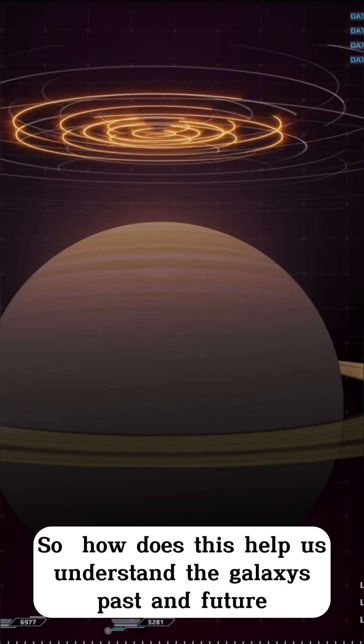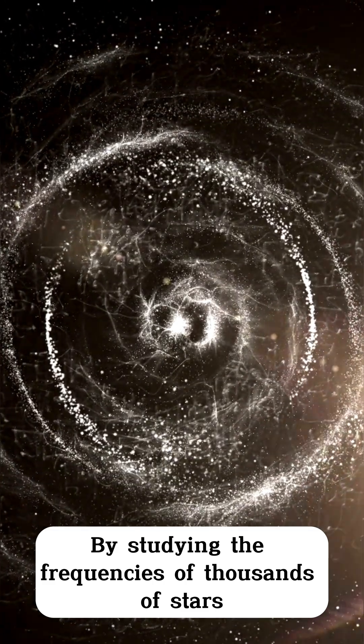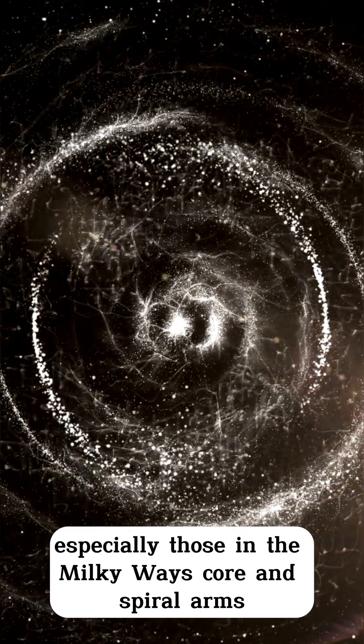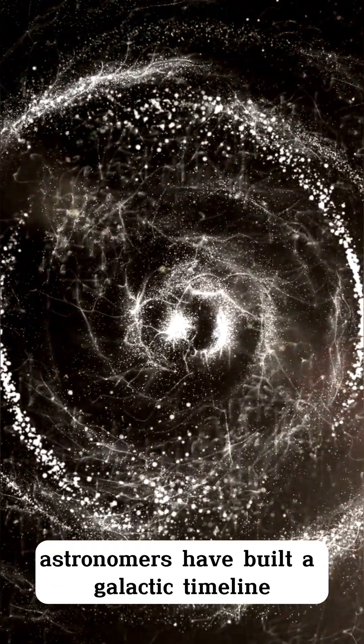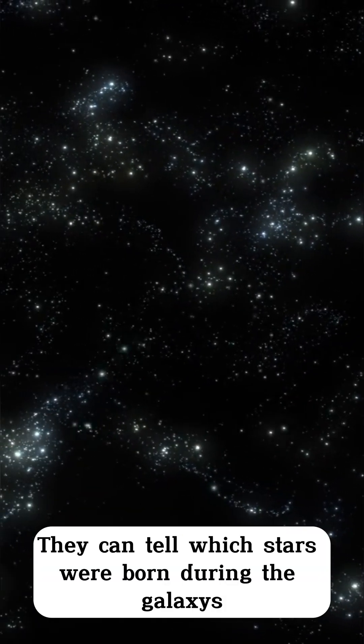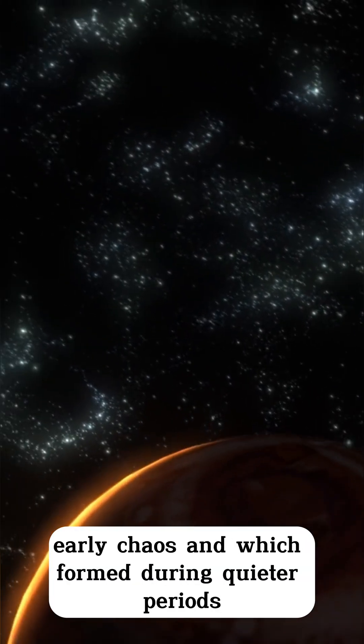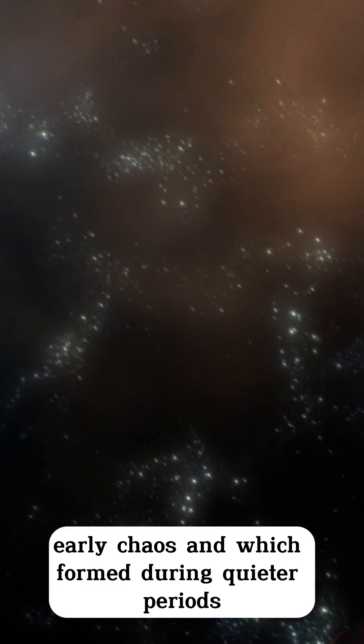So, how does this help us understand the galaxy's past and future? By studying the frequencies of thousands of stars, especially those in the Milky Way's spiral arms, astronomers have built a galactic timeline. They can tell which stars were born during the galaxy's early chaos and which formed during quieter periods.